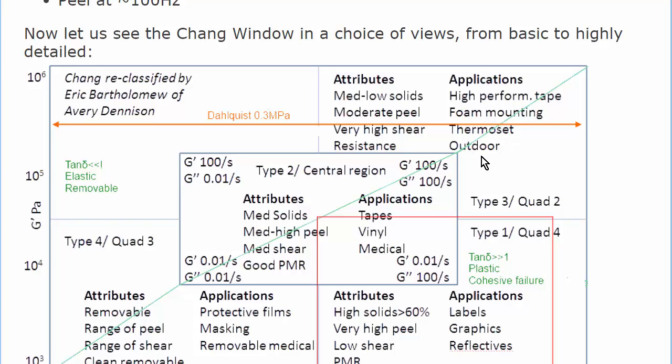So make sure you are below Dahlquist, and make sure that you and the team know where you want to be in this Chang window space. Once you've done that, the chances of formulating a good PSA are greatly increased.